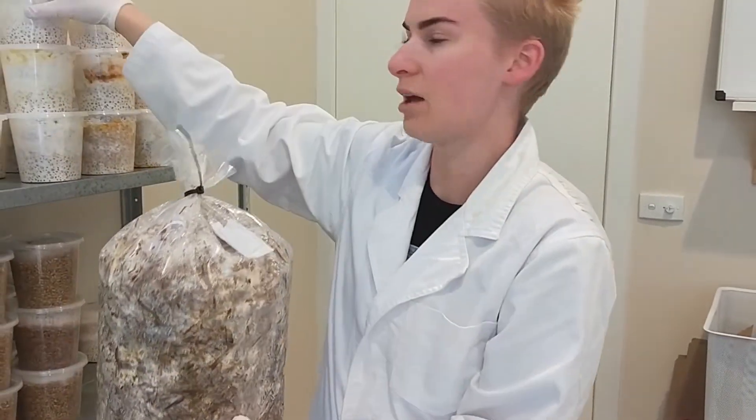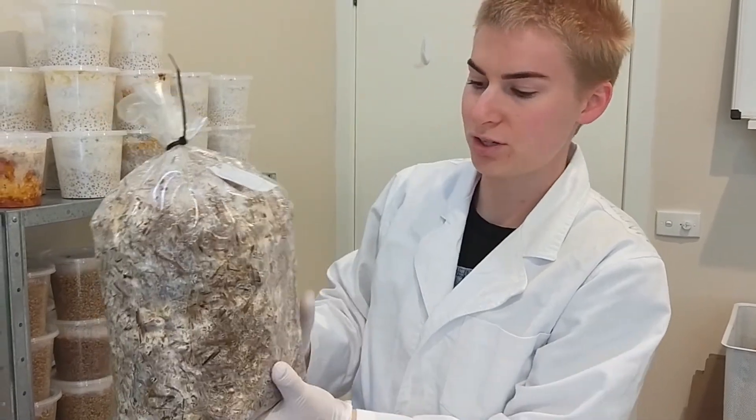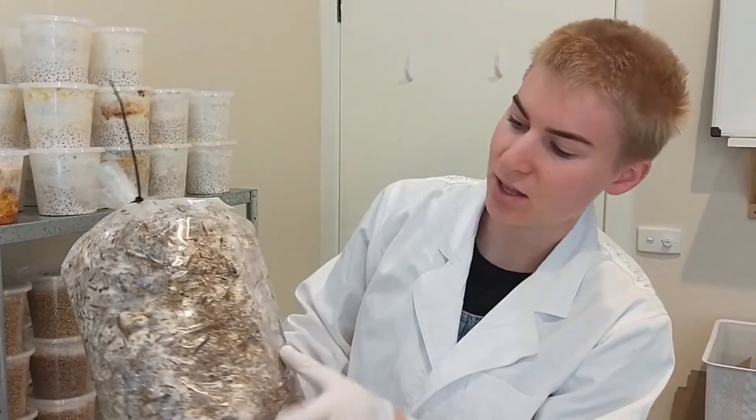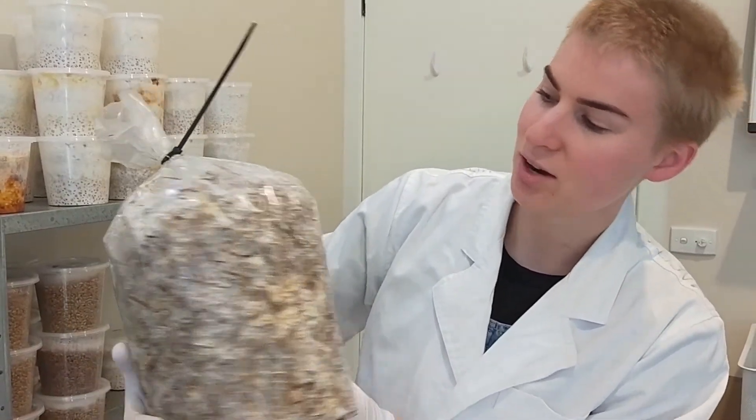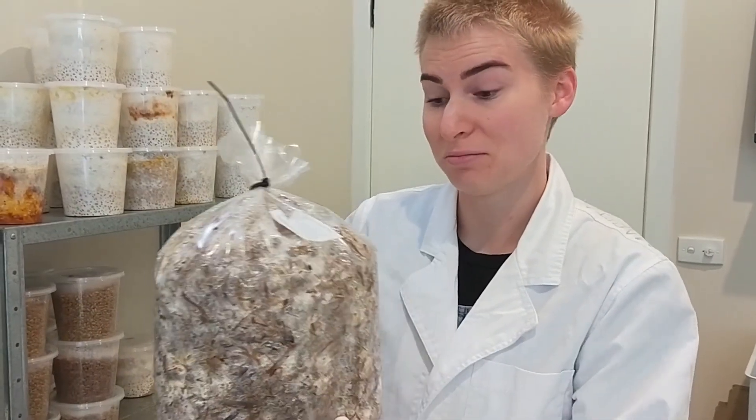This is that mycelium on grain crumbled through sterilized sugarcane, and as you can see the white mycelium is starting to colonize the substrate and sort of fill it out nicely. It's starting to break down all those lignins and some of those cellulosic structures, and in a couple of weeks will be ready for fruiting.